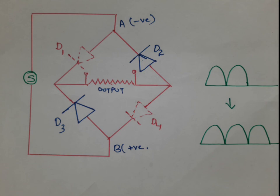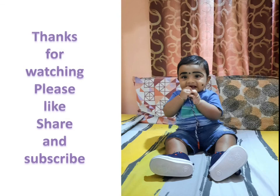In half wave rectification we convert only the positive half cycles of alternating current into direct current, whereas in full wave rectification we convert both positive and negative half cycles into direct current. In a half wave rectifier we use only a single diode, whereas in a full wave rectifier we use two or more diodes. Thank you so much for watching — if you find this video useful please like, share and subscribe.